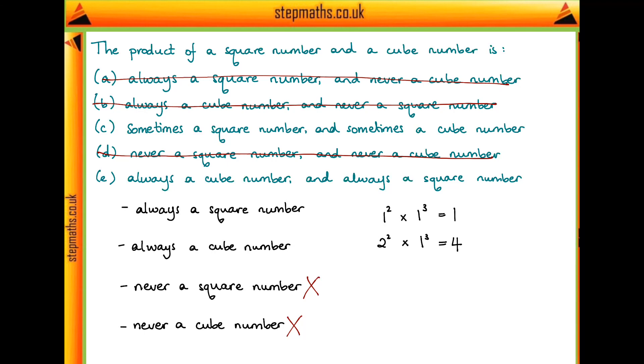So this example proves that this second statement is not true—our product is not always a cube number. But e says that it would be, so that means that e cannot be correct. Therefore we have option c as the correct answer.